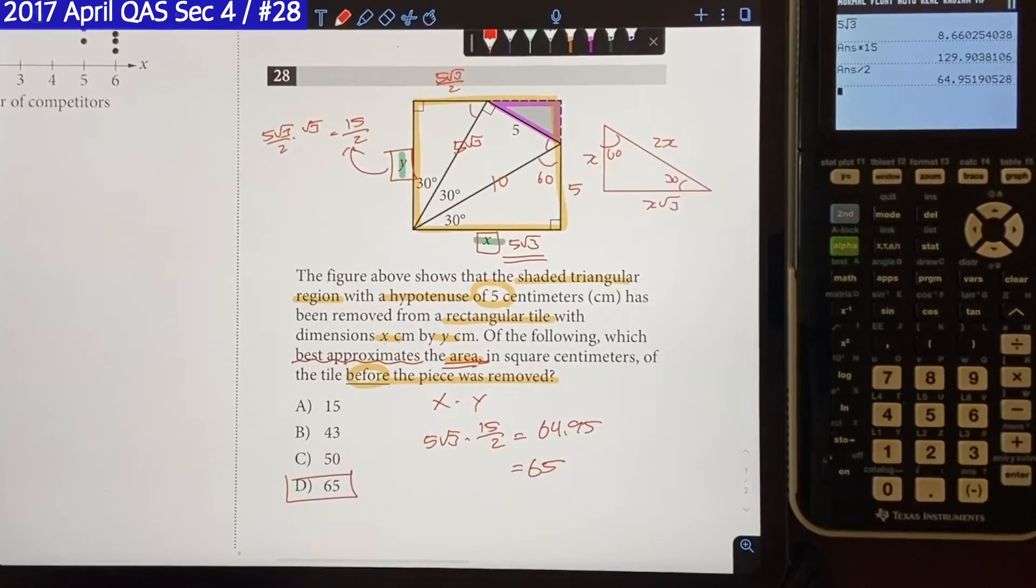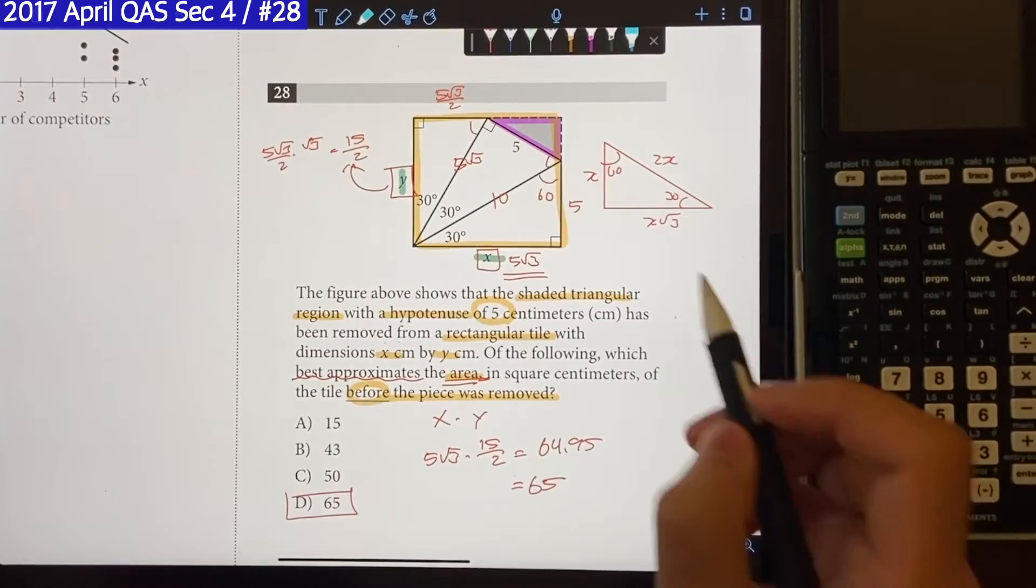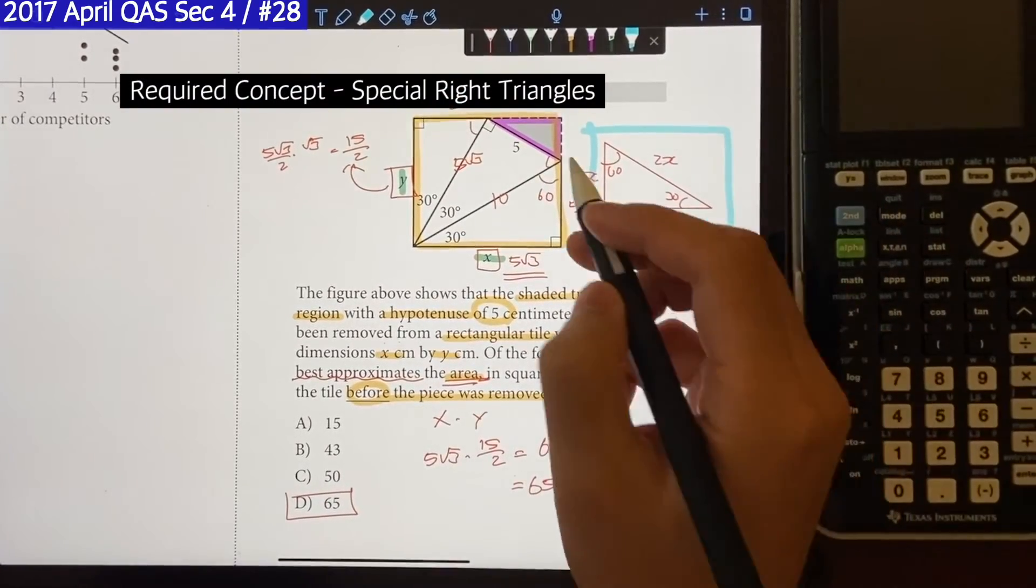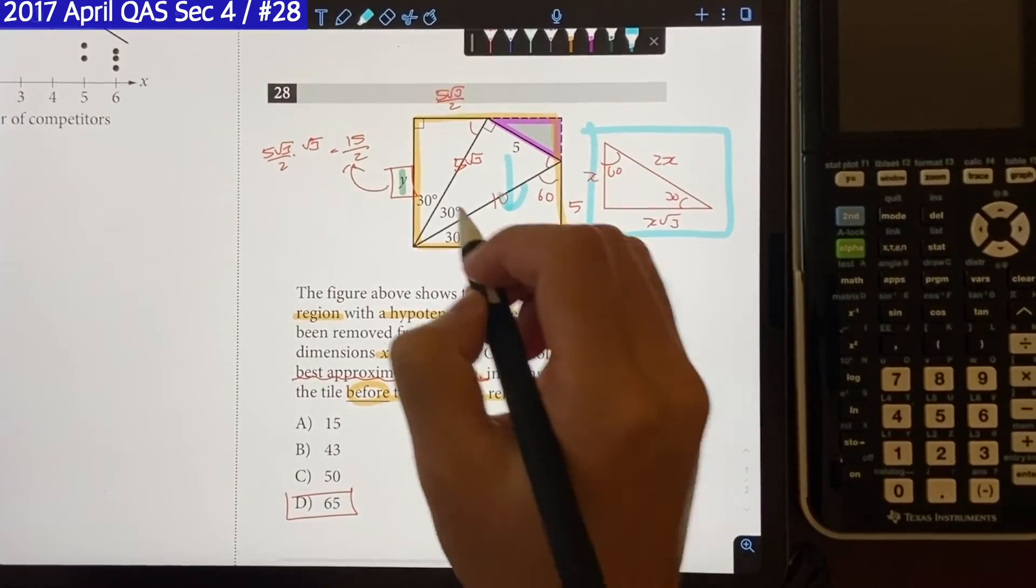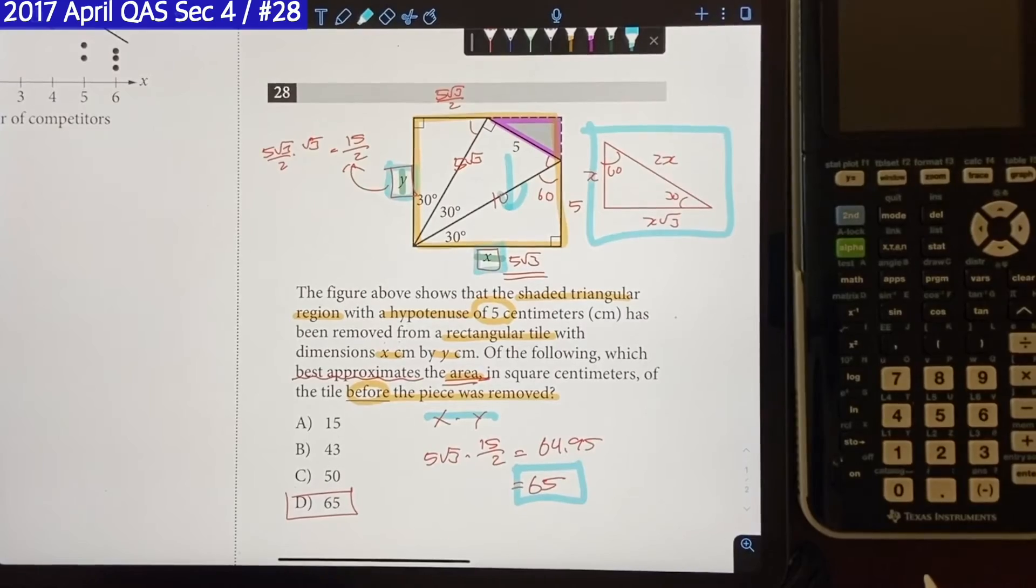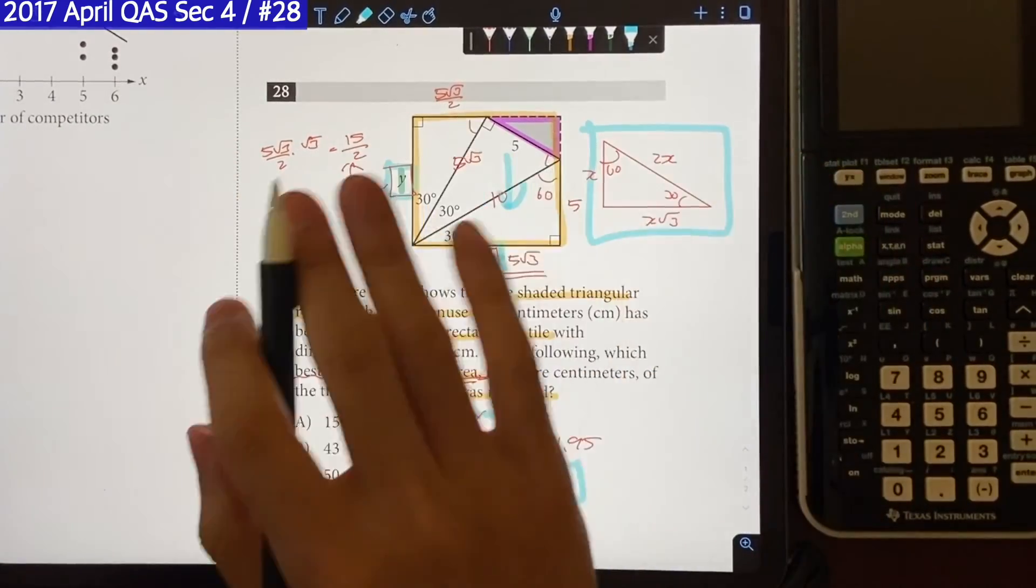So in order for you to solve this question correctly and carefully, you need to know what special right triangles is and how it works. That way, you can work your way down, find out what x is, what y is, multiply them together and get yourself to the answer. So make sure you master the concepts first and then do the practice questions, not the other way around.